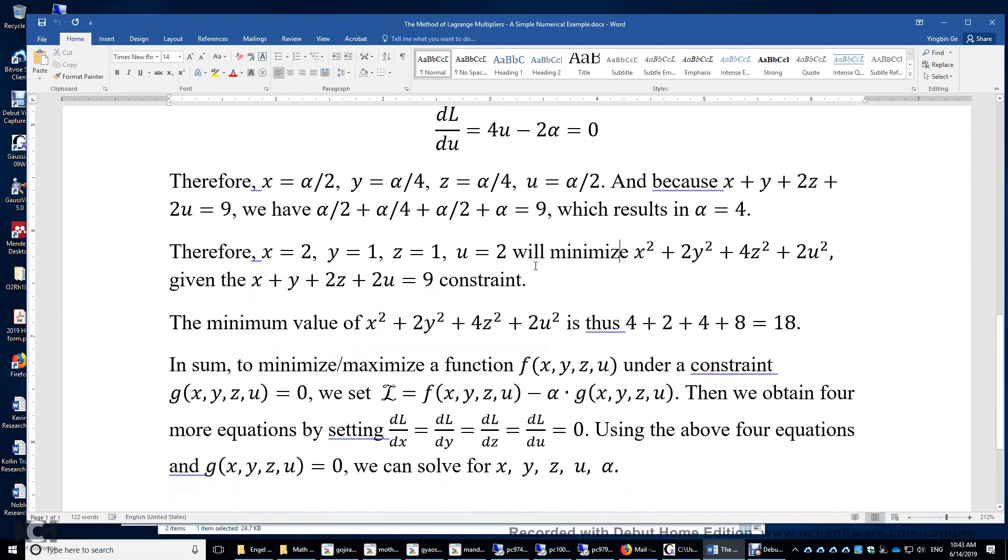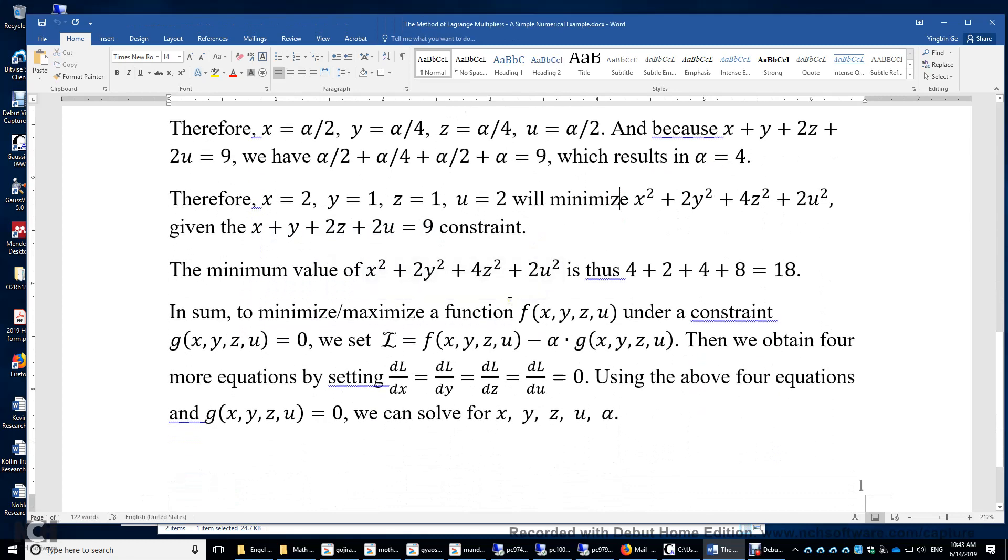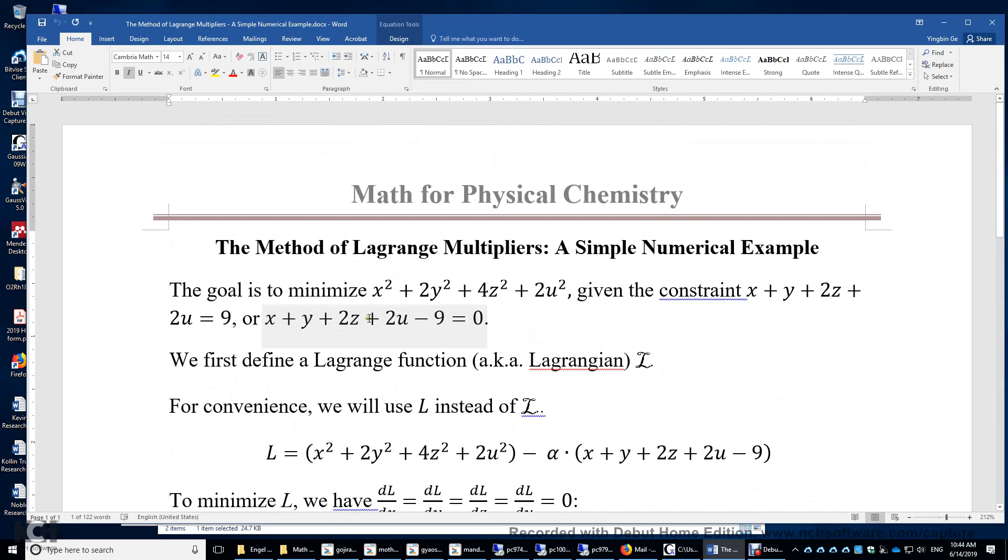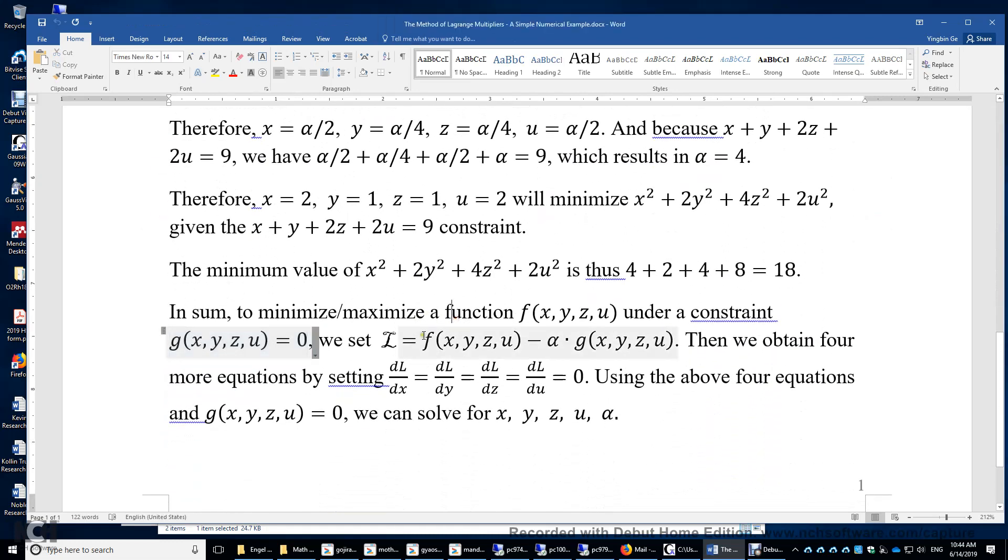Alright, so in summary, if you want to minimize or maximize a function f of, for example, four variables under a constraint, this constraint is another function of these four variables equals zero. So what if this function of x, y, z, and u equals something else? You simply just use the left hand side minus right hand side, and then you get zero. Okay, make sure your constraint is a function equals zero. Alright, and then we set the Lagrangian.